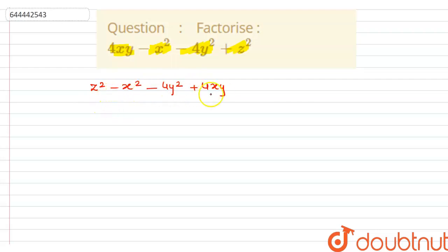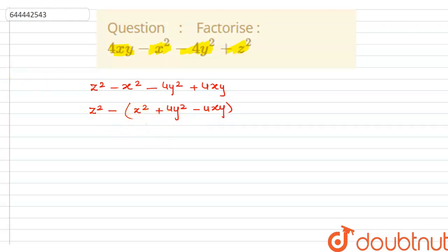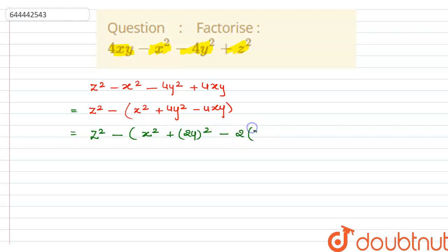Now we can take minus common from these three terms. So this will become z square, and minus is common from here — so this will be plus x square, plus 4y square, and minus 4xy. We can write this as z square minus of x square and (2y) whole square, minus of 2 times x times 2y.